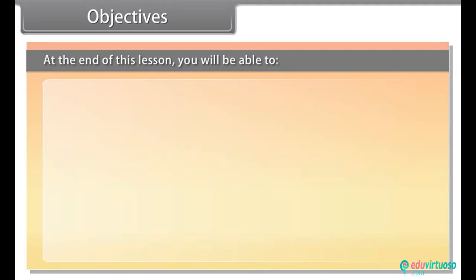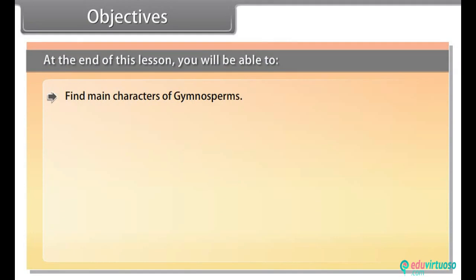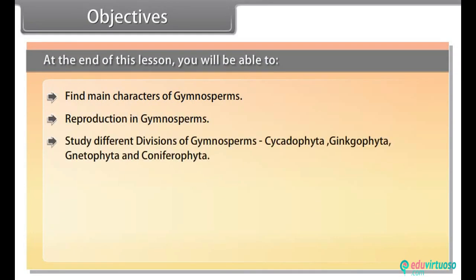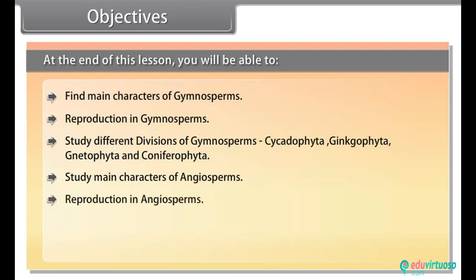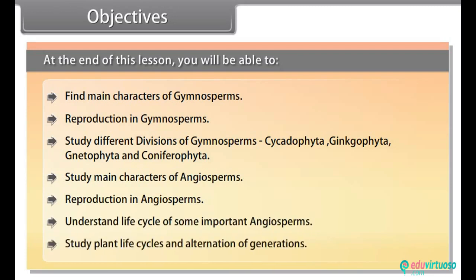At the end of this lesson you will be able to find main characters of gymnosperms, reproduction in gymnosperms, study different divisions of gymnosperms — cycadophyta, ginkgophyta, gnetophyta and coniferophyta — study main characters of angiosperms, reproduction in angiosperms, understand life cycle of some important angiosperms, and study plant life cycles and alternation of generations.